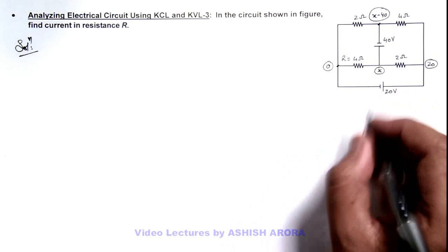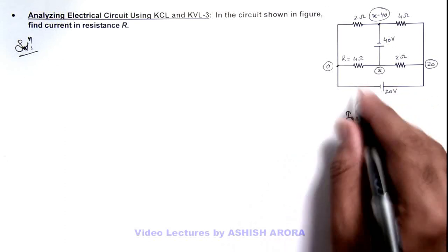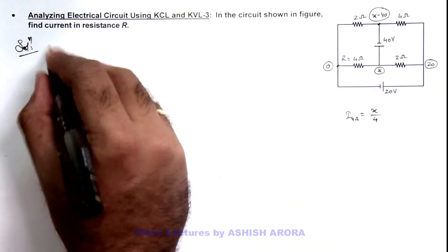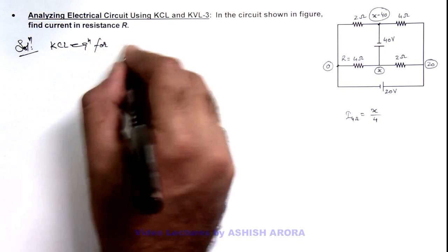Now if I get the value of x, this current in 4 ohm resistance I can directly write as x minus zero by 4. So I can write KCL equation for the potential x.